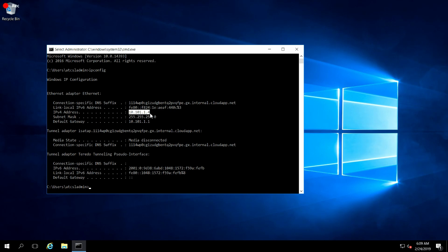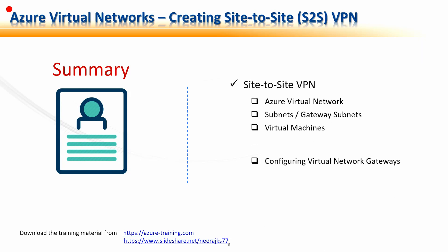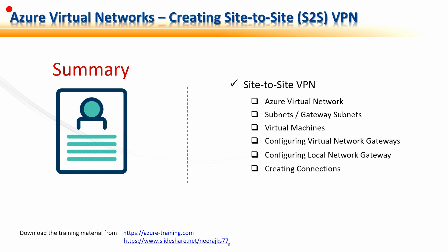This concludes our demo. In summary, we learned how to create a Site-to-Site VPN and how the on-premises network can be connected to the Azure virtual network, allowing on-premises resources to access Azure virtual network resources using the VPN gateway. You can visit azuretraining.com or SlideShare to download all the training materials. Hope this session was informative and helpful, and you now completely understand how S2S works and its applicabilities. Thank you for joining.